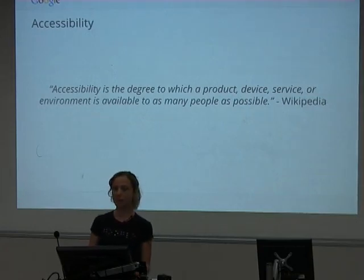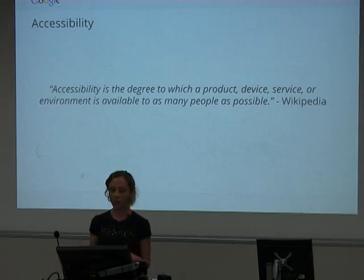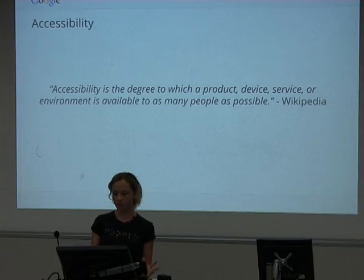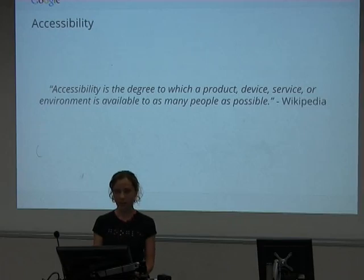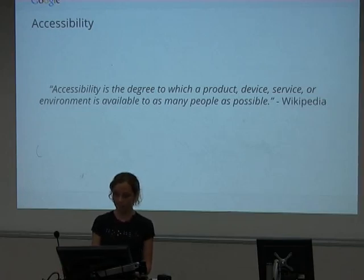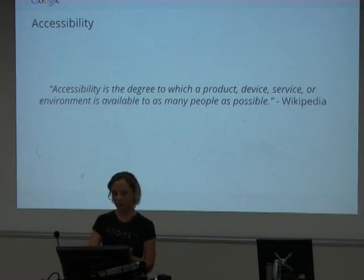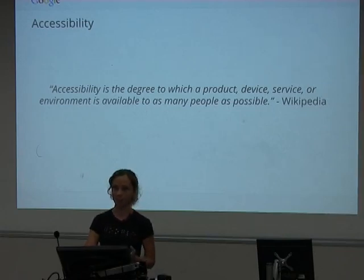I'm going to go into a bit of an Accessibility 101 to give some background on what we're actually talking about when we talk about testing for accessibility. This great Wikipedia quote says: accessibility is the degree to which a product, service, device or environment is available to as many people as possible. What I like about this definition is that it doesn't mention ability or disability at all. Accessibility includes things like me standing outside in bright sun looking at my mobile, and encompasses the fact that we are all functionally disabled from time to time.